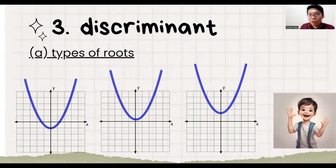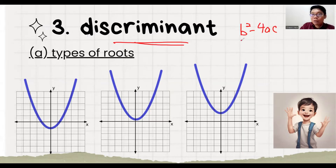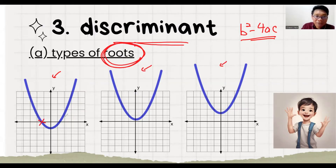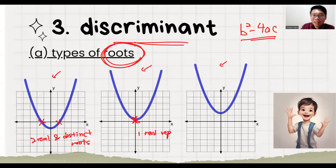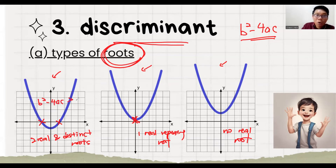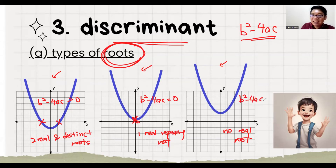The last technique is how to use the discriminant. The discriminant is b-squared minus 4ac. Using this, we can identify how many roots a quadratic function has. There are three situations: first, two real distinct roots; second, one real repeating root; and third, no real root. When b-squared minus 4ac is greater than 0, there are two real distinct roots. When b-squared minus 4ac equals 0, there is one repeating root. When b-squared minus 4ac is less than 0, which is a negative value, there is no real root.